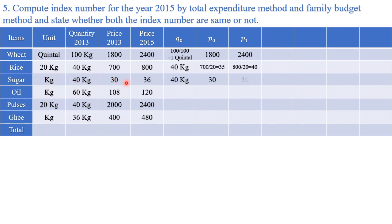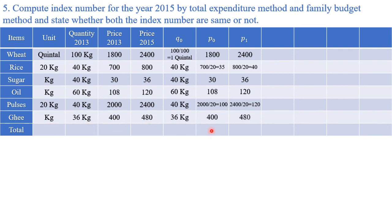For sugar there is no change. For oil, unit is 20 kg again: convert prices 2000/20 = 100 and 2400/20 = 120 per kg; quantity stays as is. Remaining items have no changes. Conversion is complete. For understanding how to calculate both the total expenditure method and the family budget method together, refer to the linked video.